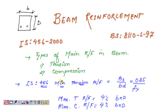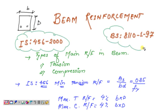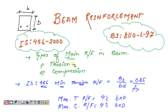I'll be explaining the reinforcement of RCC beams — the minimum and maximum reinforcement — based on two international codes: IS 456 (Indian Standard) and BS 8110 Part 1, 1997. First, we need to understand the types of main reinforcement. I'll be talking about only main reinforcement, not shear reinforcement or stirrups. In an RCC beam, we have two types of main reinforcement: tension reinforcement and compression reinforcement.